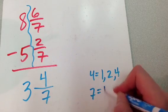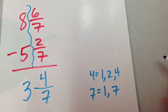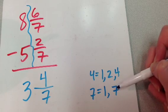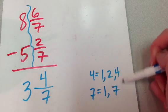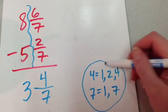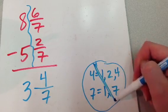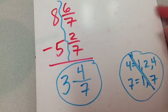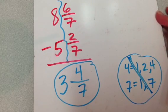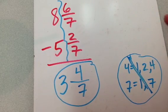What are the factors of 7? Well, 7 is prime, right? The only factors it has are 1 and itself. I have no factors in common. So, I know that this is reduced down as far as it can go. And so, 3 and 4 sevenths is my answer.